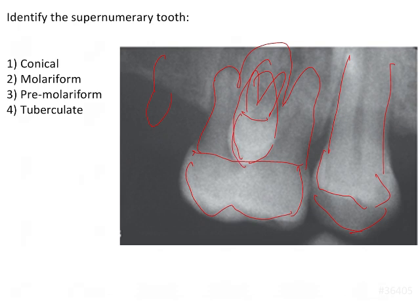Based on the options, it is either conical, molariform, premolariform, or tuberculate.